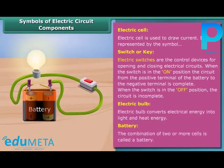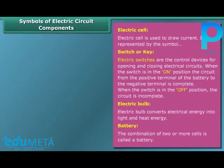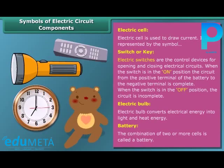The combination of two or more cells is called a battery. In a battery, the positive terminal of one cell is connected to the negative terminal of the next cell. Many devices such as torches, wall clocks and watches, toys, and TV remote controls are battery-operated devices.